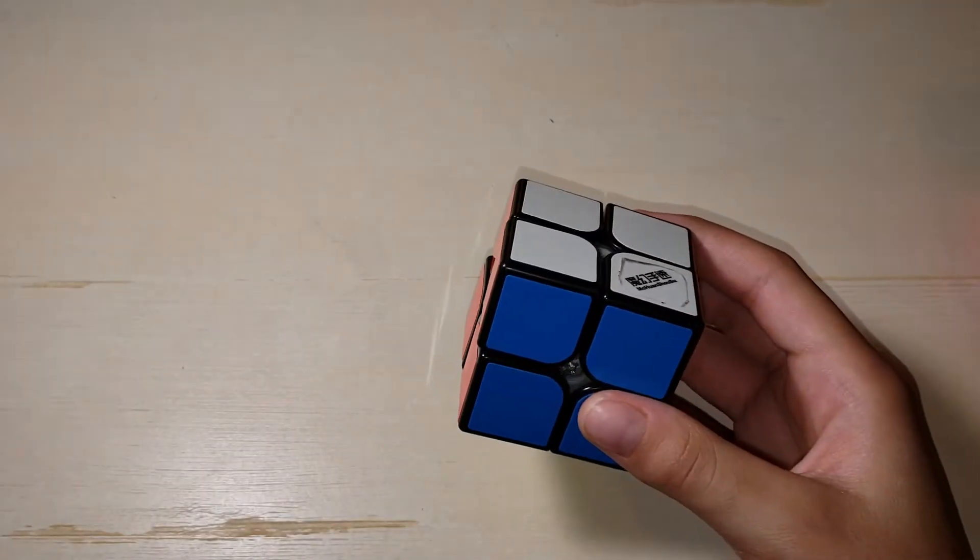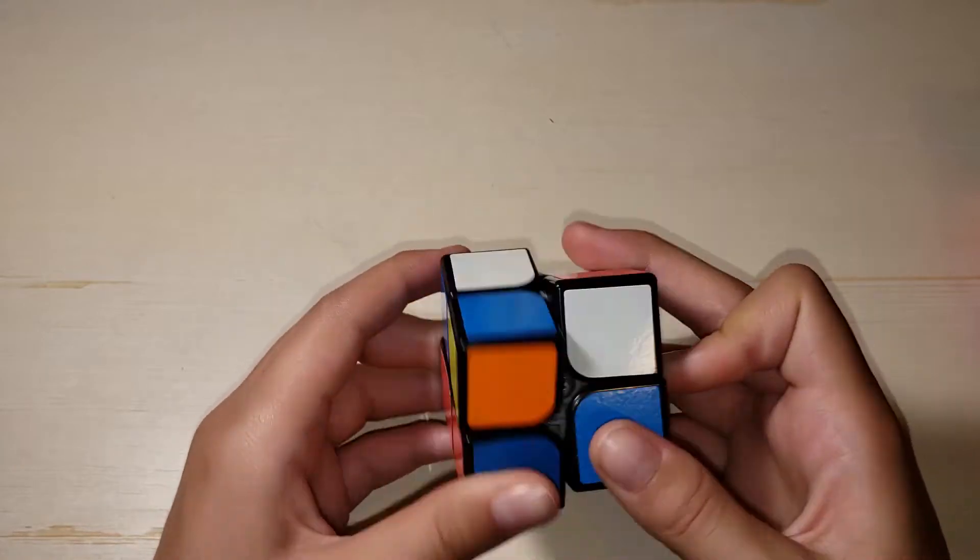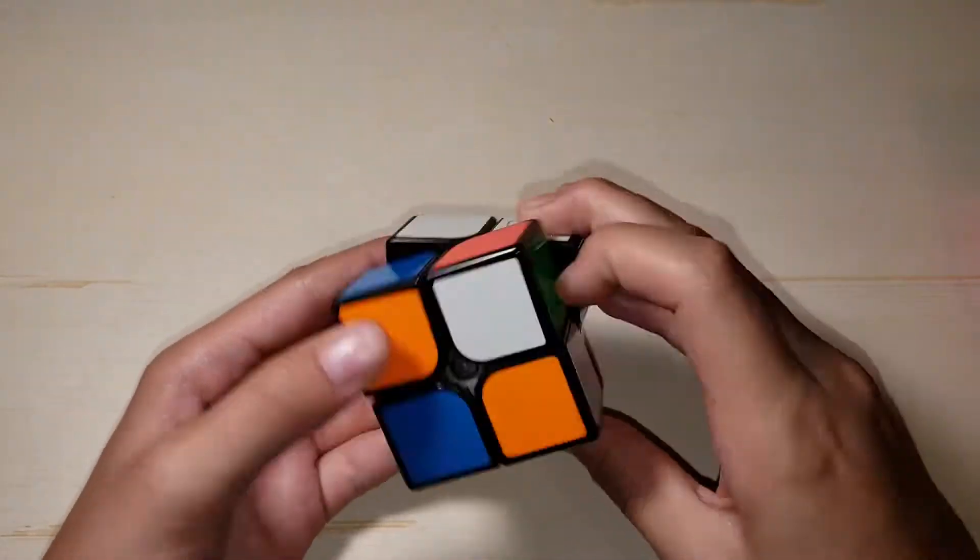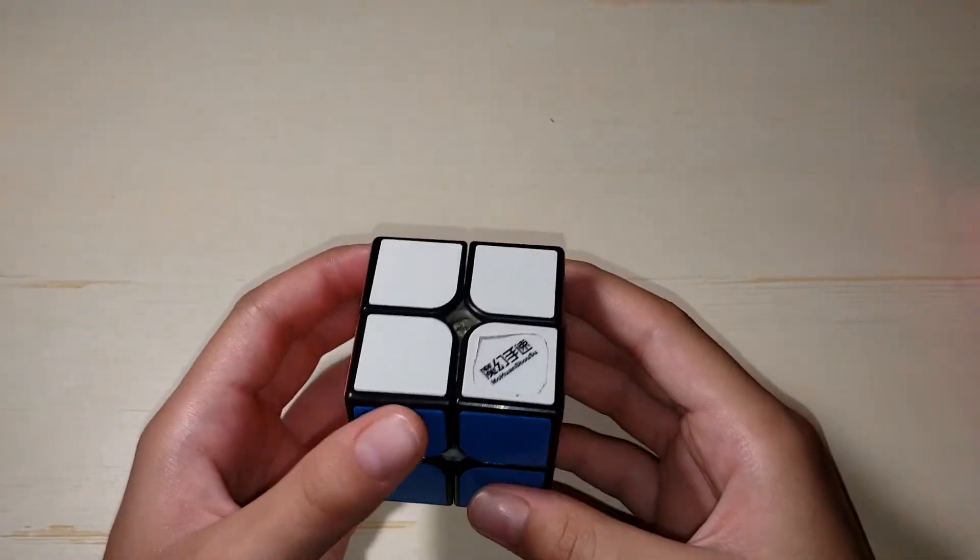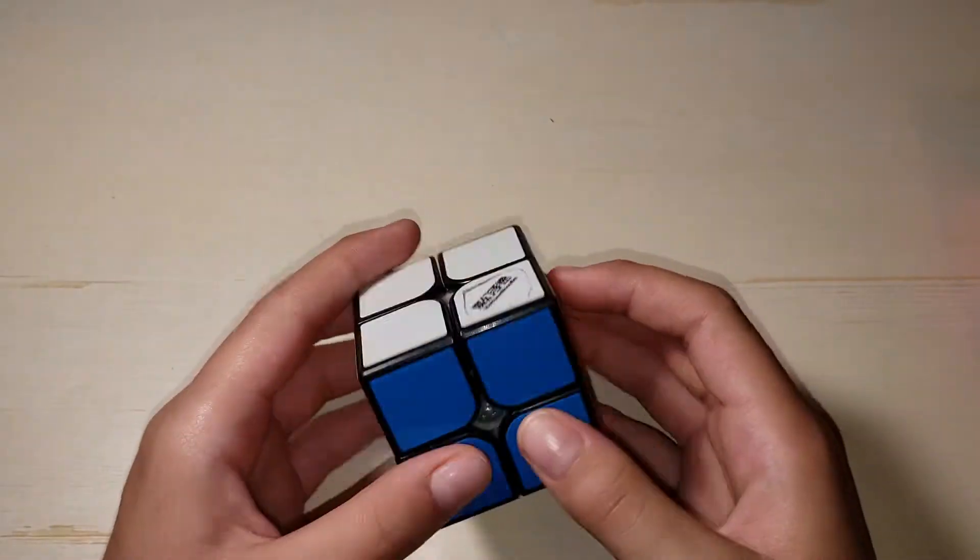So, for average, I would like to get a sub 3.6 average. For single, I would love to get, okay, I don't really care about the average, honestly, for this event. I would just really like to get a nice single, because my single is really bad, just 2.8. So, sub 2.8 single would be great.